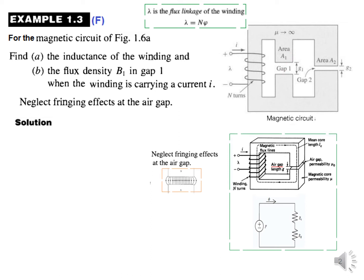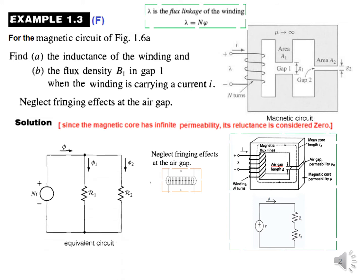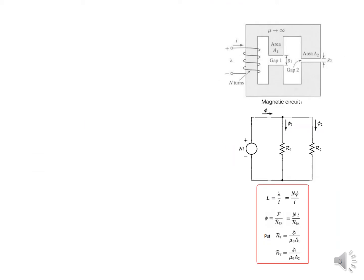So our circuit equivalent will become something like this: we have the driving source N*i, and due to this air gap the reluctance is R1, and due to this air gap the reluctance is R2. So this is our equivalent circuit. These are some of the formulas that we'll be using. This has been derived from the previous lectures.